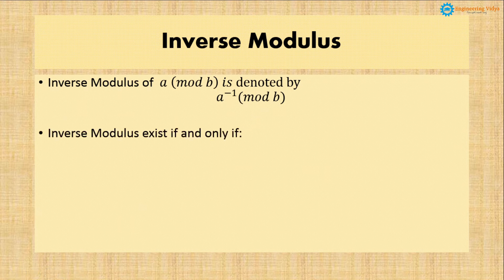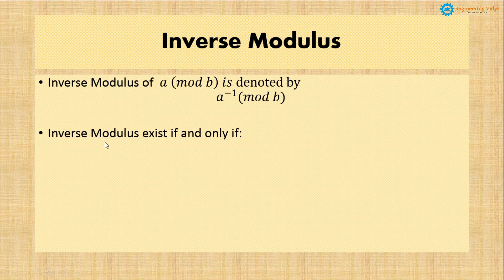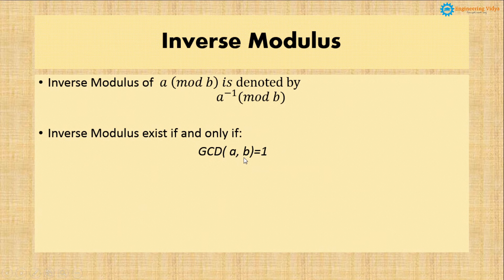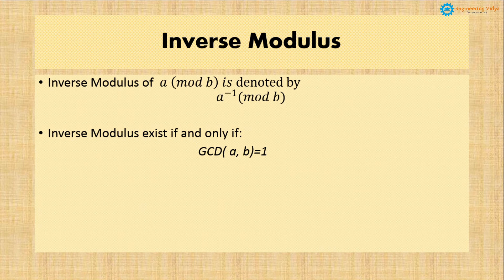One condition is very important. This condition says that inverse modulus exists if and only if GCD of a comma b is 1. If the GCD of a comma b is not equal to 1, then in that particular case we cannot find the inverse modulus.